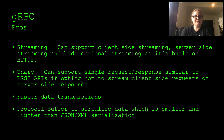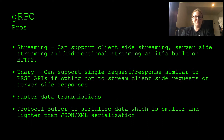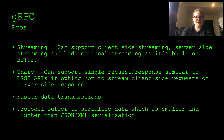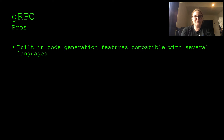For gRPC, one of the biggest pros is streaming. It supports client-side streaming, server-side streaming, and bi-directional streaming, as it's built on the HTTP/2 protocol. It can also support unary operations, which is very similar to the request-response pattern in REST APIs. There's also faster data transmission — the protocol buffer is used to serialize data, which produces smaller, lighter payloads than JSON or XML. There are also built-in code generation features compatible with several languages.